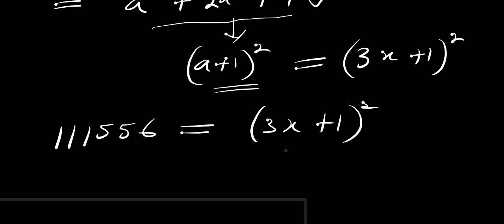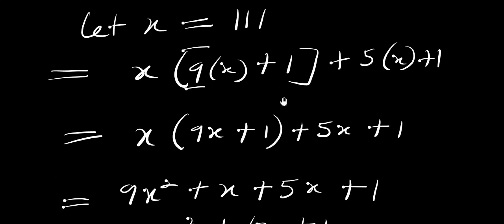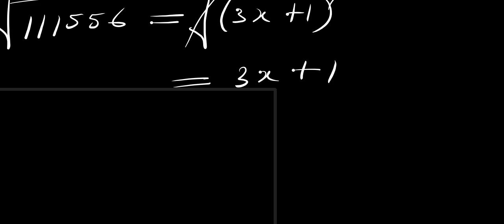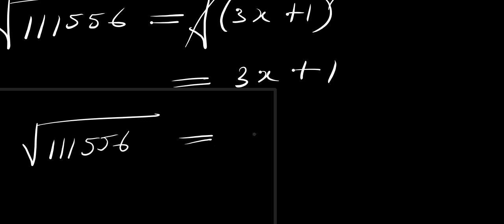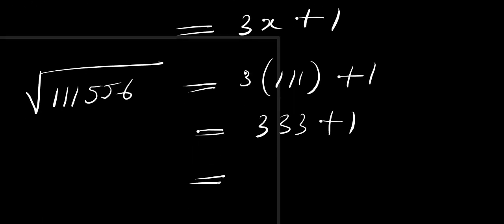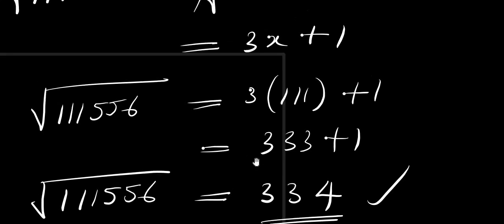Since we need the square root of 111556, the square root cancels the square, leaving us with 3x plus 1. Our x equals 111, so: square root of 111556 equals 3 times 111 plus 1, which equals 333 plus 1, giving a final answer of 334.